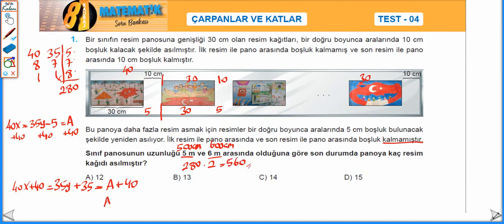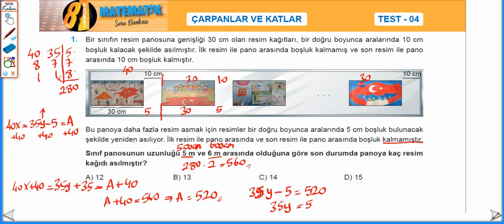a artı 40 eşittir 560 ise buradan a 520'ye eşit olur. 35y eksi 5 ifadesi buradaki y resim kağıdı sayısını verecek. 35y eksi 5 eşittir 520 ise 35y eşittir 525 olur. Buradan da her iki tarafı 35'e böldüğümüzde y eşittir 15 olarak bulunur. Yani 15 tane resim kağıdı asılmıştır. İkinci durumda cevap D.